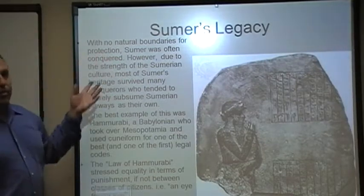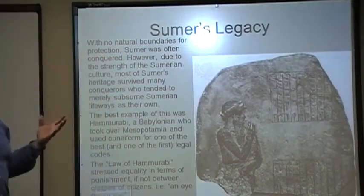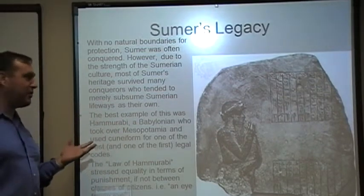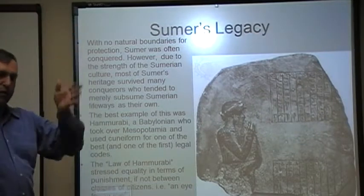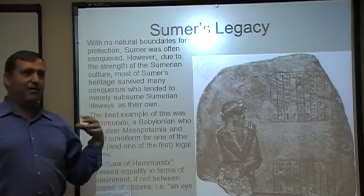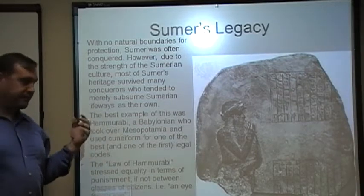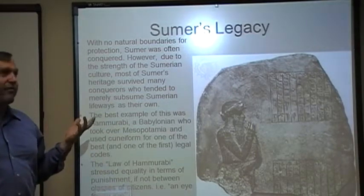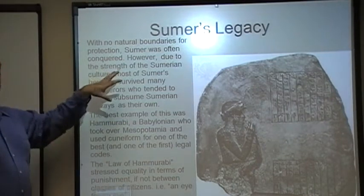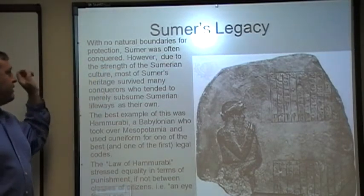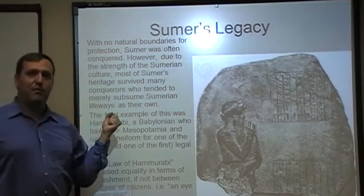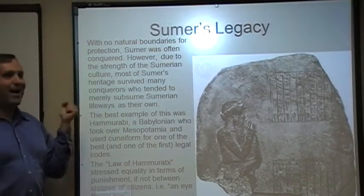One of the problems Sumer has as an expansive city-state is it has no real natural boundaries. To the east and west you've got relatively open terrain, and the river system runs mostly north and south. It doesn't have mountains or oceans to keep out invaders. So Sumer was often attacked and often conquered. One of the things that happens, though, is you've got a great deal of strength in Sumerian culture itself, and this is going to be one of our first windows of conquest.